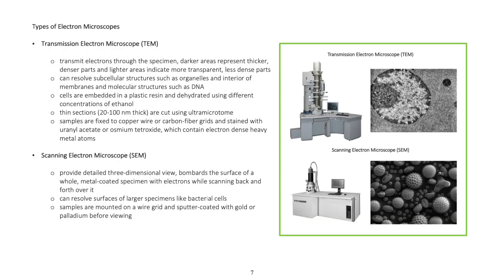Types of electron microscopes. Transmission electron microscope (TEM) transmits electrons through the specimen. Darker areas represent thicker, denser parts, and lighter areas indicate more transparent, less dense parts.